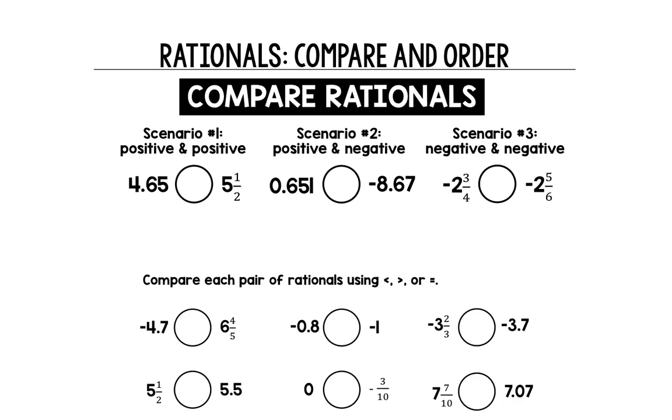This lesson is on comparing and ordering rational numbers. We know that rational numbers can be expressed in the form of a fraction, a mixed number, or a decimal. We're going to learn some strategies here to ensure that you're successful each time.